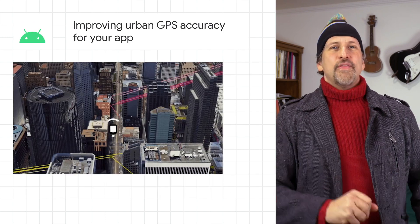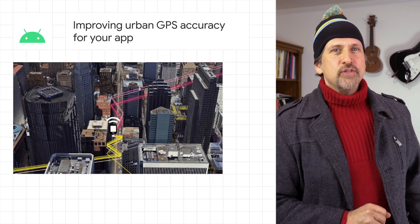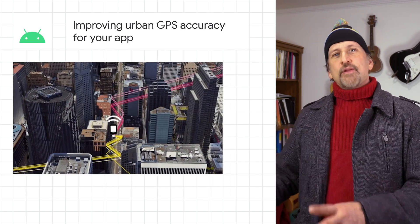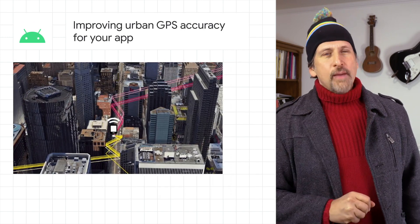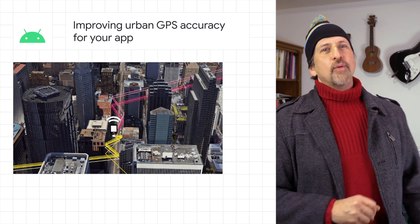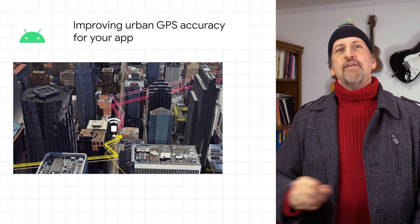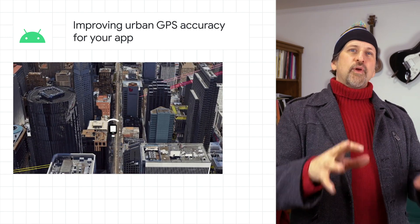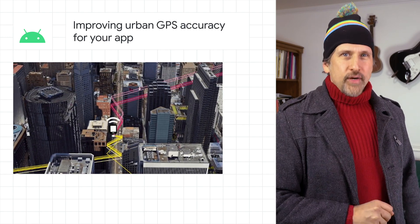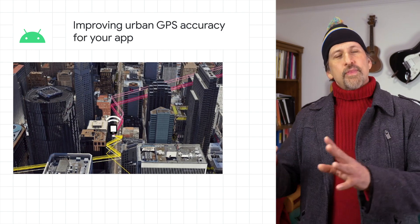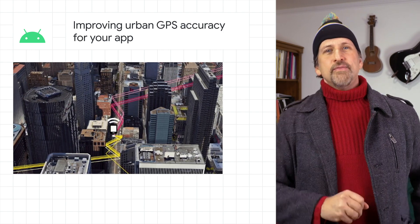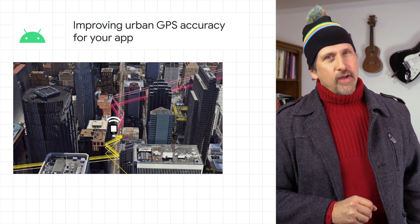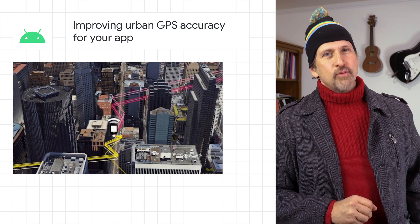We announced that the December Pixel Feature Drop adds machine learning-powered 3D mapping aided GPS corrections to Pixel 5 and Pixel 4a 5G, reducing wrong side of street occurrences in more than 3,850 cities by approximately 75%.